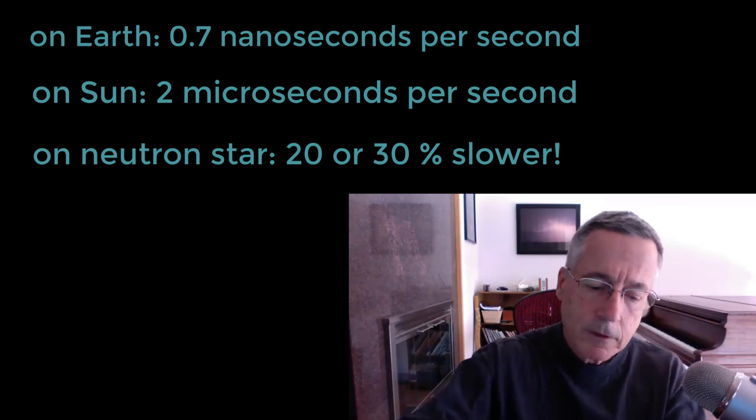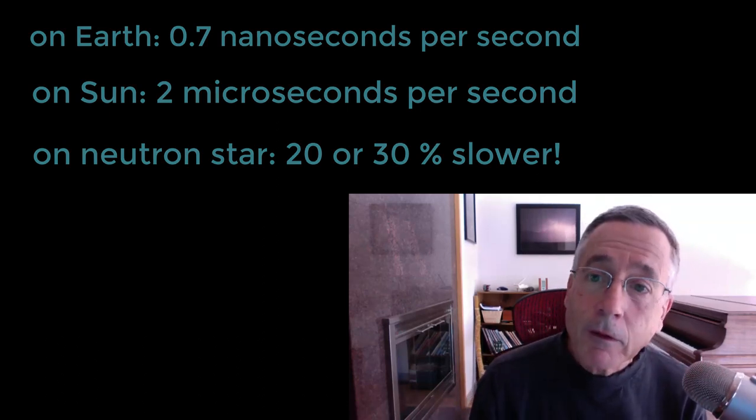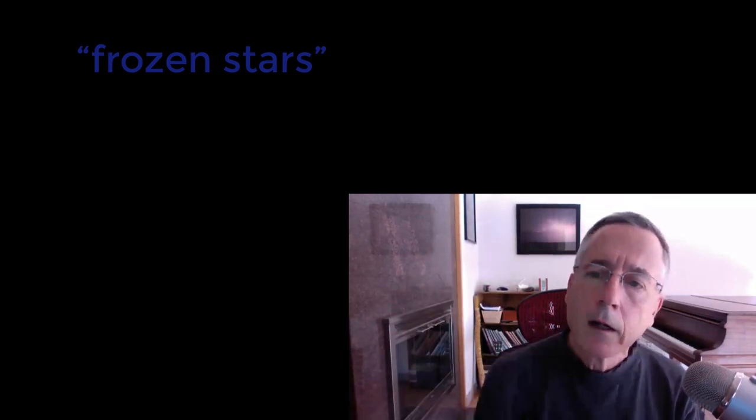If you were down on the neutron star — besides the fact that you'd get squashed — time would appear to run at the correct rate. The most extreme case is a black hole. At the very surface of the black hole, at the event horizon, time appears to stop — it's redshifted to infinity. That was the origin for the original ideas of black holes when they were first thought of back in the 30s and 40s. They called them frozen stars, because if you dropped a clock into a black hole, you'd see it slowing down, and right at the event horizon the clock doesn't appear to move anymore — those wave crests have been stretched out to infinity. That's why they were called frozen stars: frozen in time.